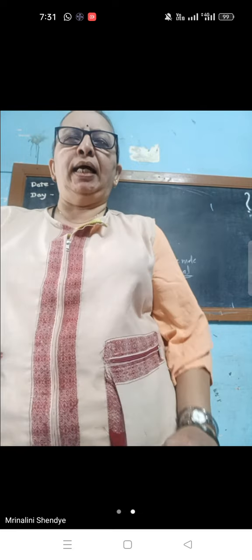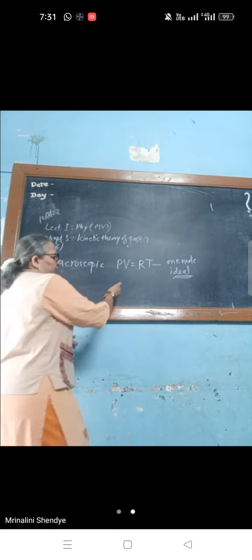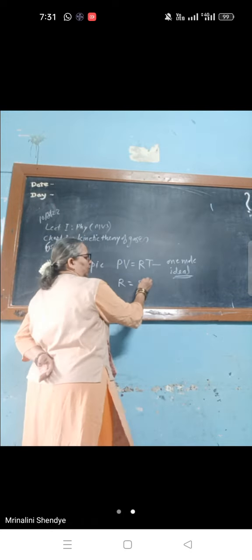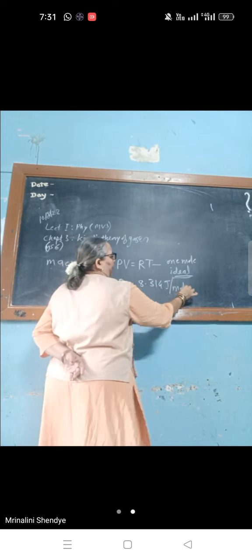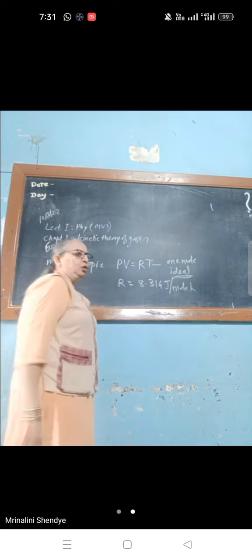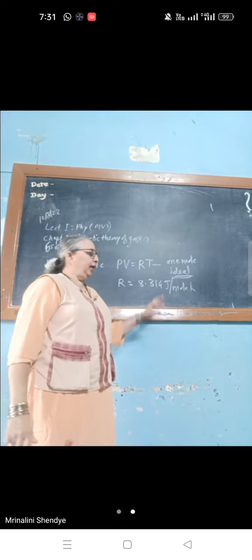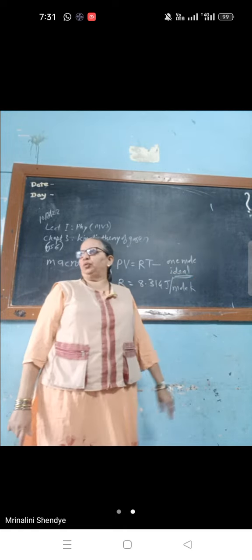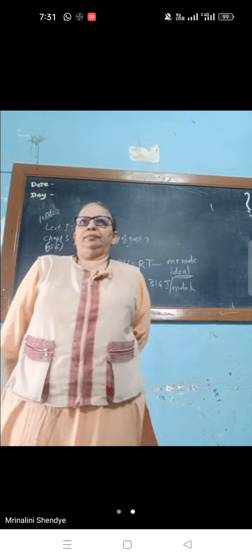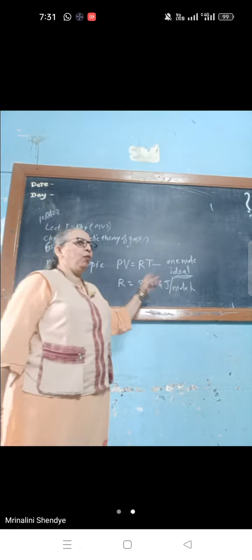R is given in SI units. R equals 8.314 joule per mole per kelvin. Sometimes they write joule mol raised to minus 1, T raised to minus 1 — either form is the same. So this is for one mole.